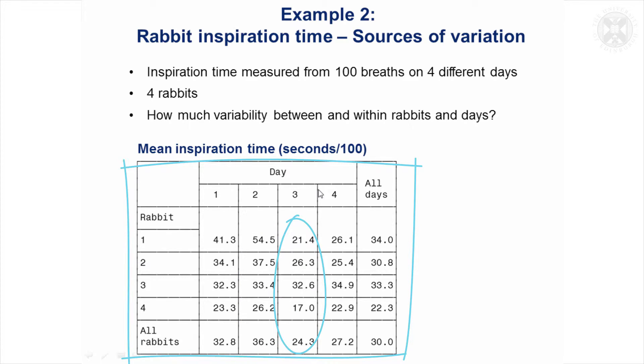I don't know if these experiments were done at different times of day or different circumstances on different days, but the rabbits do seem to overall vary between the days. Looking at the overall means for the different rabbits, they're quite variable. Rabbit four seemed to have faster inspiration than the other rabbits.